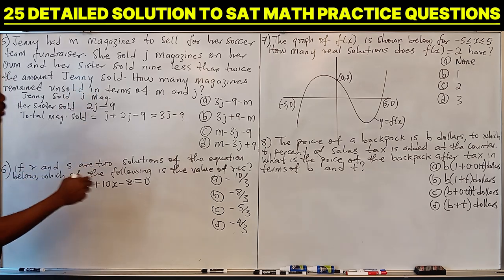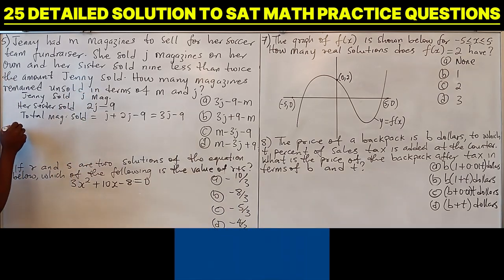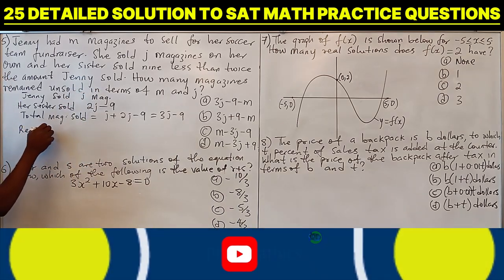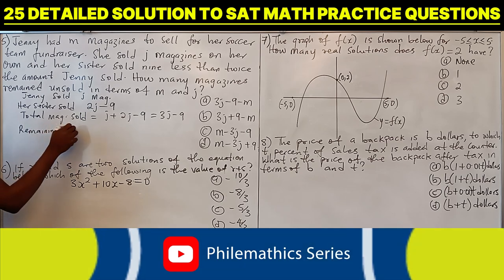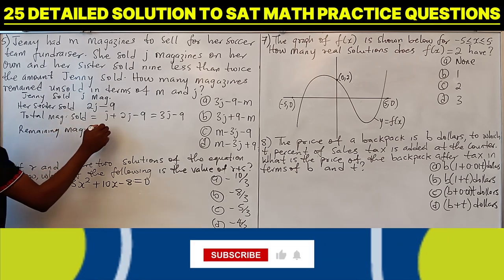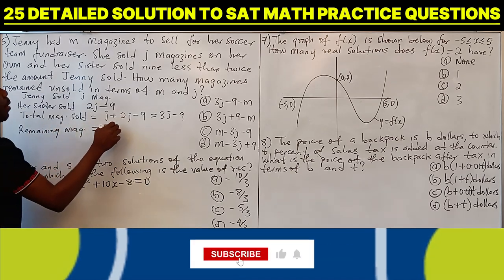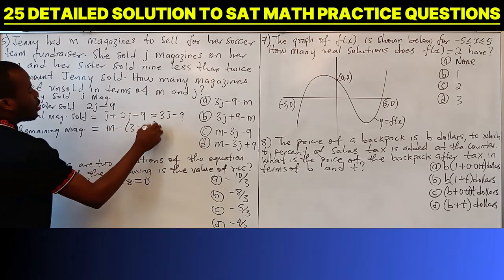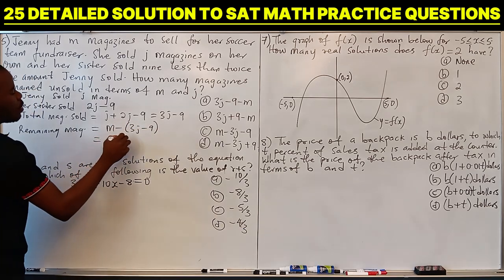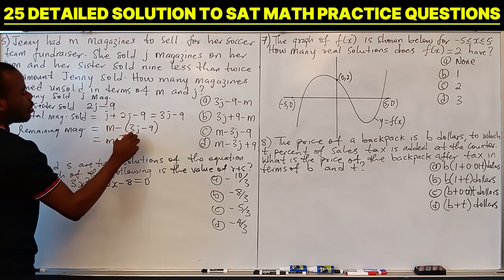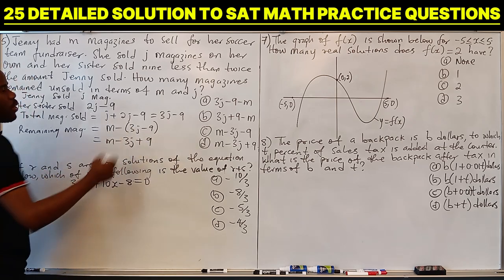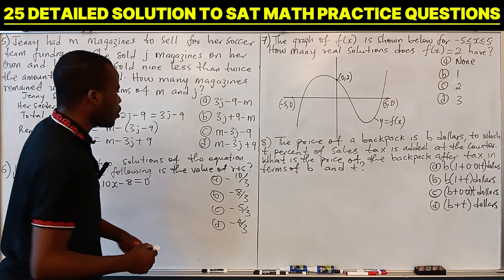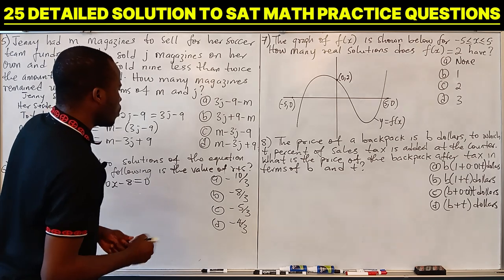So the number of magazines that remain unsold — since they had M magazines to sell — will be M minus (3J minus 9), which equals M minus 3J plus 9, because minus times minus is plus. The answer is D.